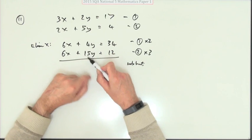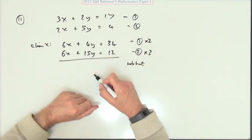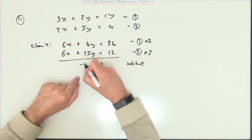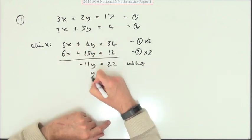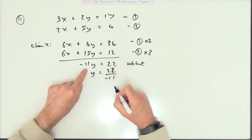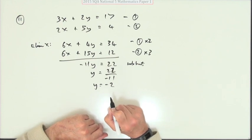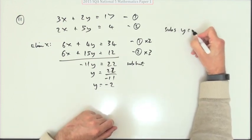So six take away six, that's zero. Four take away 15 is negative 11y. 34 take away 12 is very nicely 22. Very nicely because when you divide it by a negative 11, you get the answer exactly negative 2.